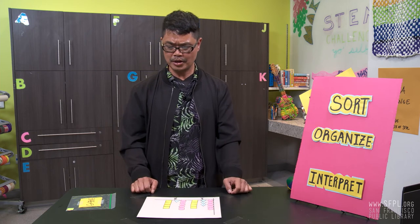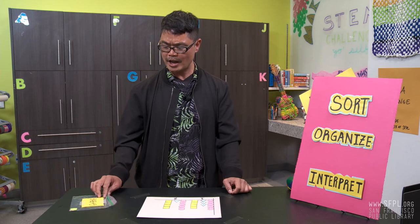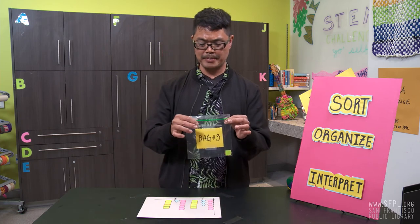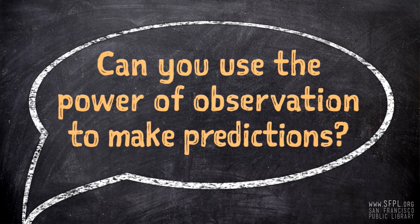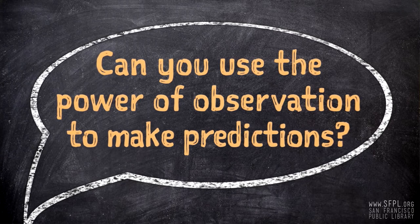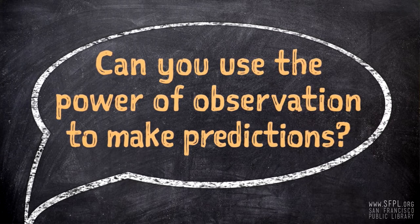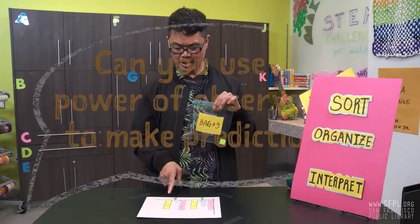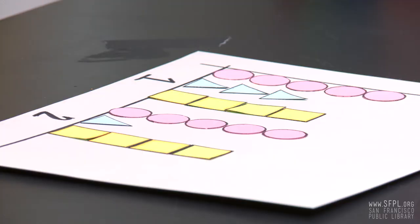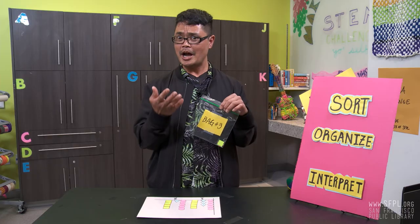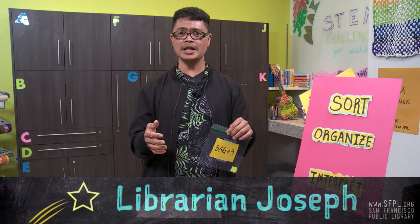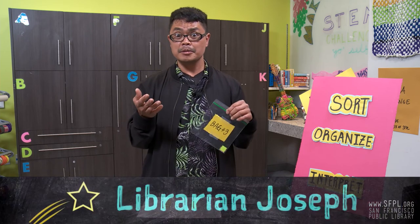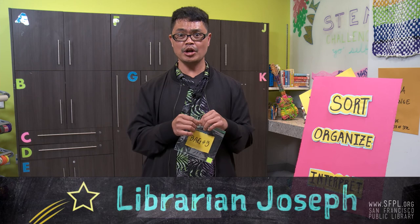Here's another interesting part. If we have another bag — let's say bag three — we can actually predict which shape has the most amount on bag number three based on those two sets of data that we played around with. Pretty cool, huh? I hope you get to try this at home. Collect some data and be surprised by your discoveries.